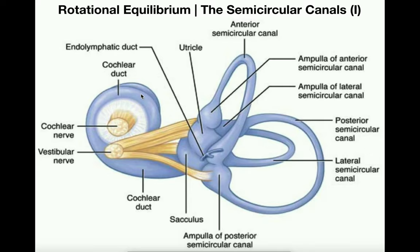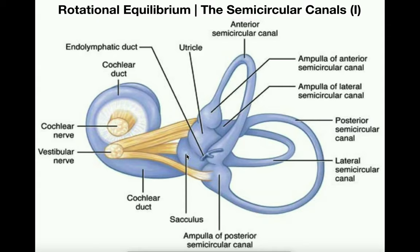In the middle we see the utricle and right next to it the sacculus, or saccule. The utricle and saccule combined make up the vestibule — that's the utricle and saccule only. Over to the right we have three semicircular canals. If we combine the three semicircular canals with the utricle and saccule, all of those together comprise the vestibular apparatus. The vestibule is only the utricle and the saccule.